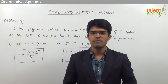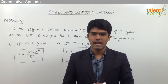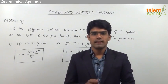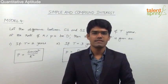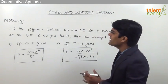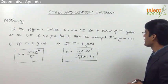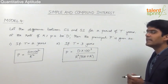Let us now take the fourth module from this topic, which is based on the difference between compound interest and simple interest for a given period of time. Let us first understand the formulae to be used to solve questions based on differences. Let the difference between compound interest and simple interest for a period of T years at the rate of R percent per annum be D.